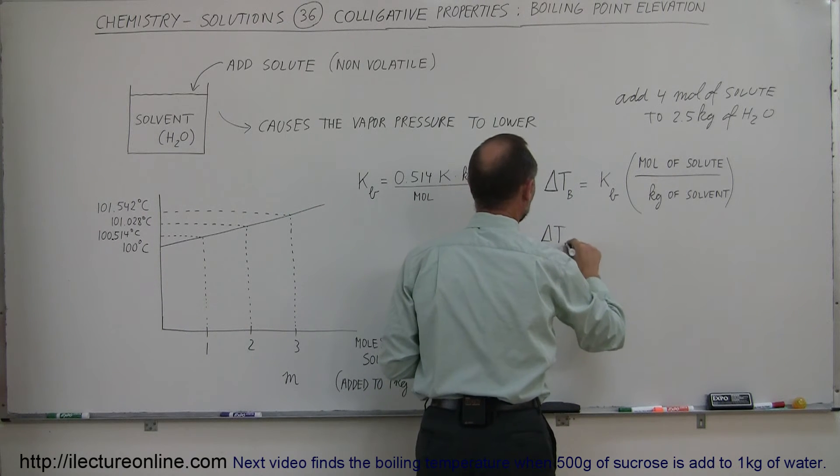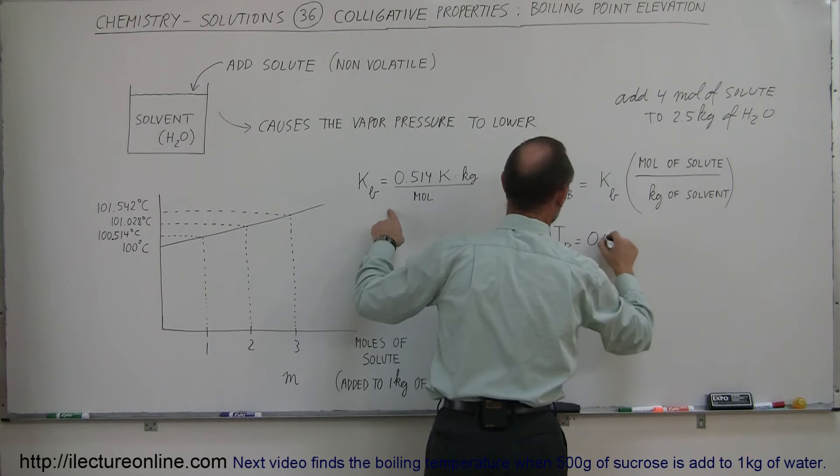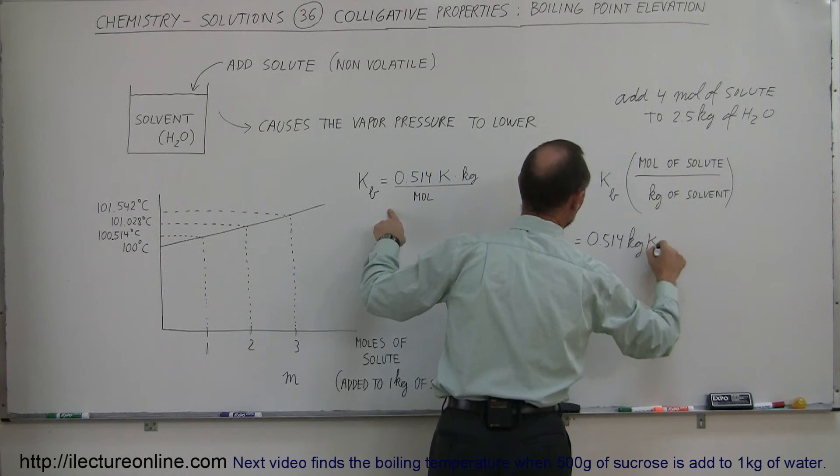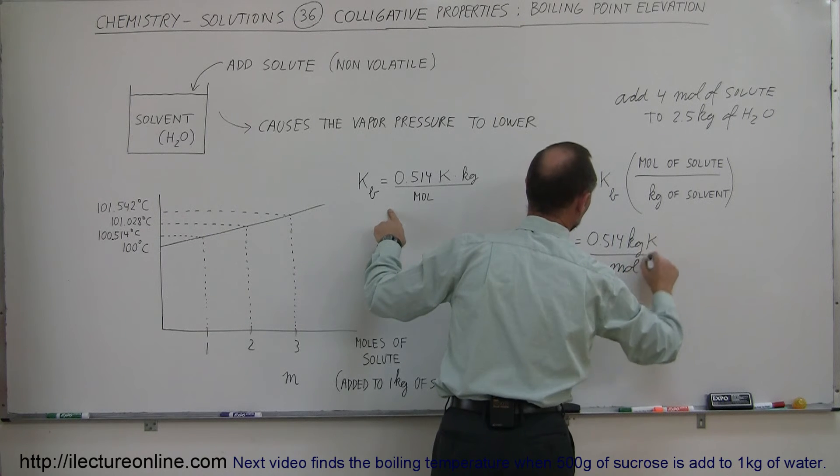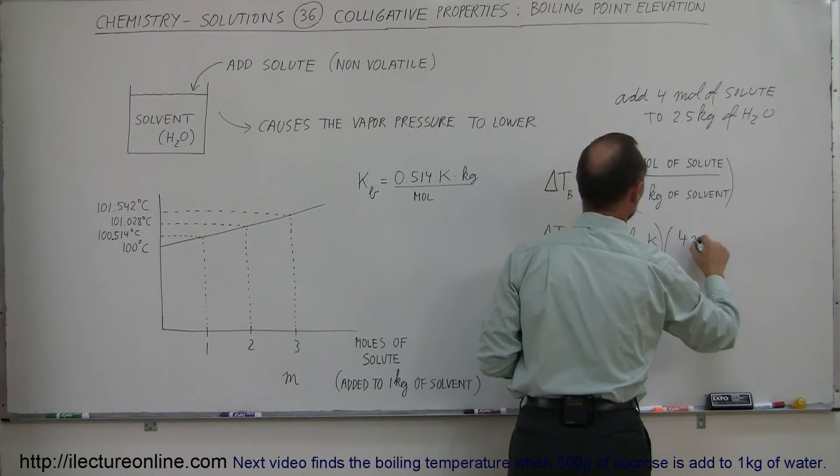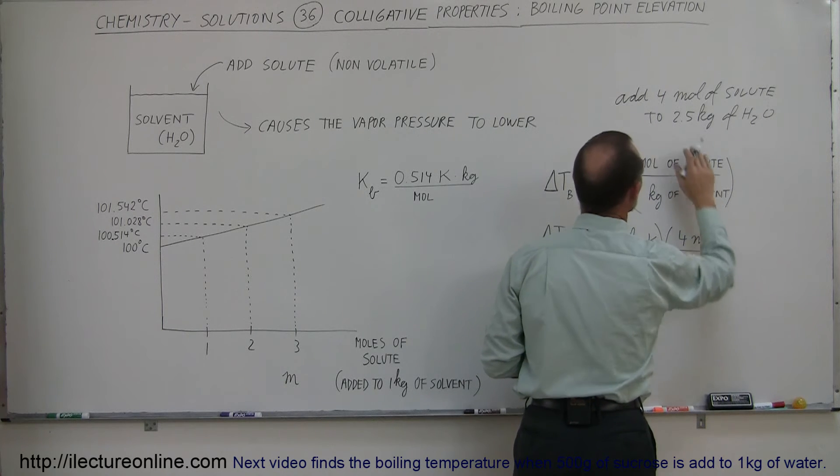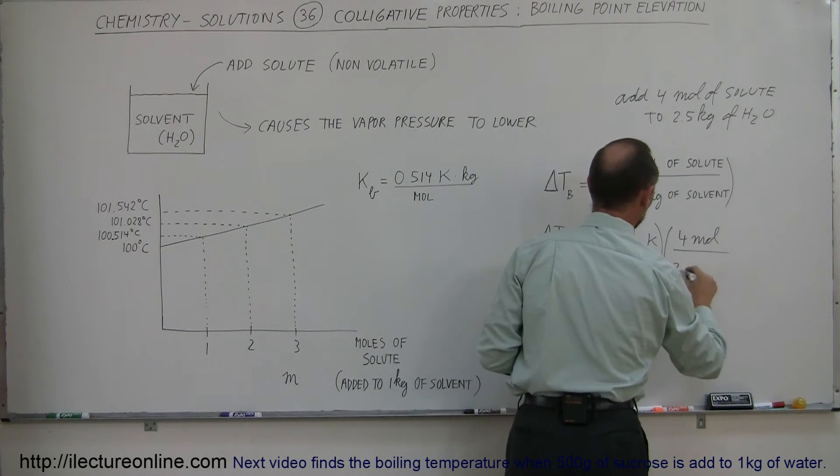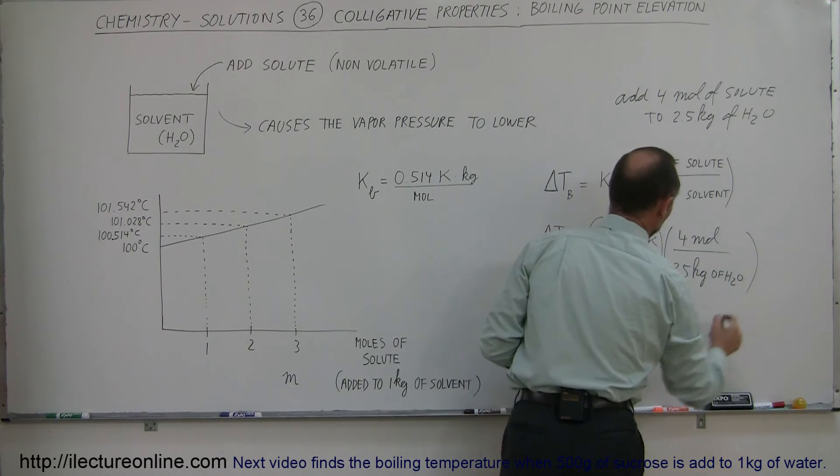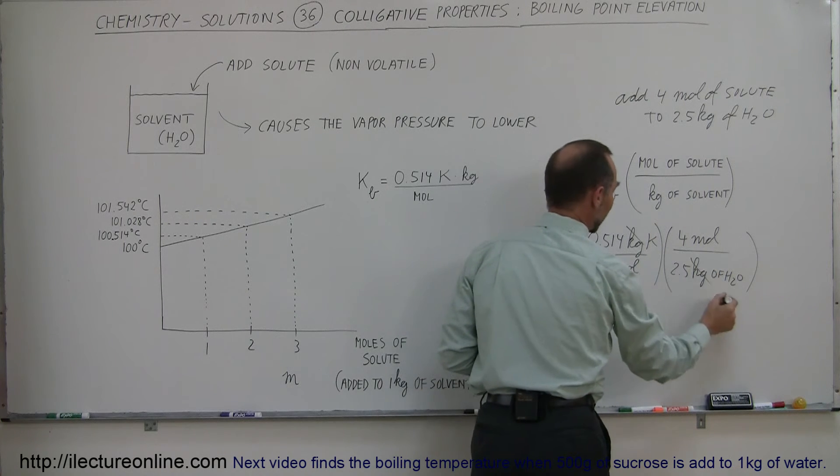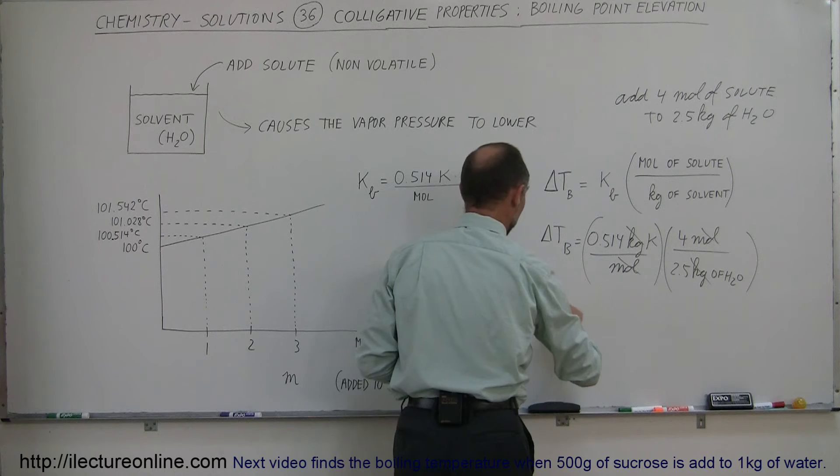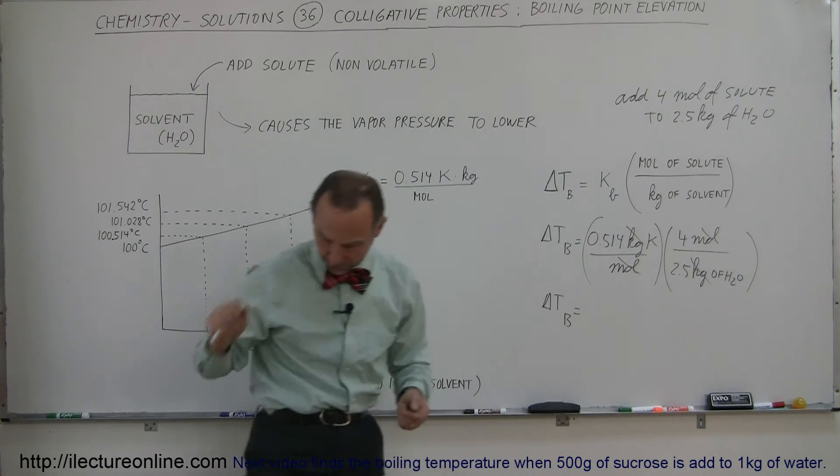The change in the boiling temperature will be equal to the constant, which is 0.514 kilograms times Kelvin per mole, multiplied times the ratio of the number of moles of solute, which is four moles, divided by the number of kilograms of solvent, which is 2.5 kilograms of H2O. The kilograms cancel out, the moles cancel out, we're left with Kelvin. So delta T, the delta temperature, is equal to...